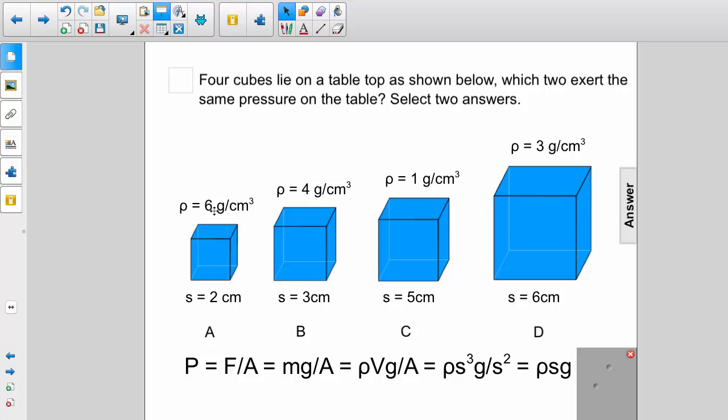So here, we have 6 times 2, which is 12 in A. And B, we have 4 times 3, which is also 12. Whereas C is 1 times 5, which is 5. And D is 3 times 6, which is 18.